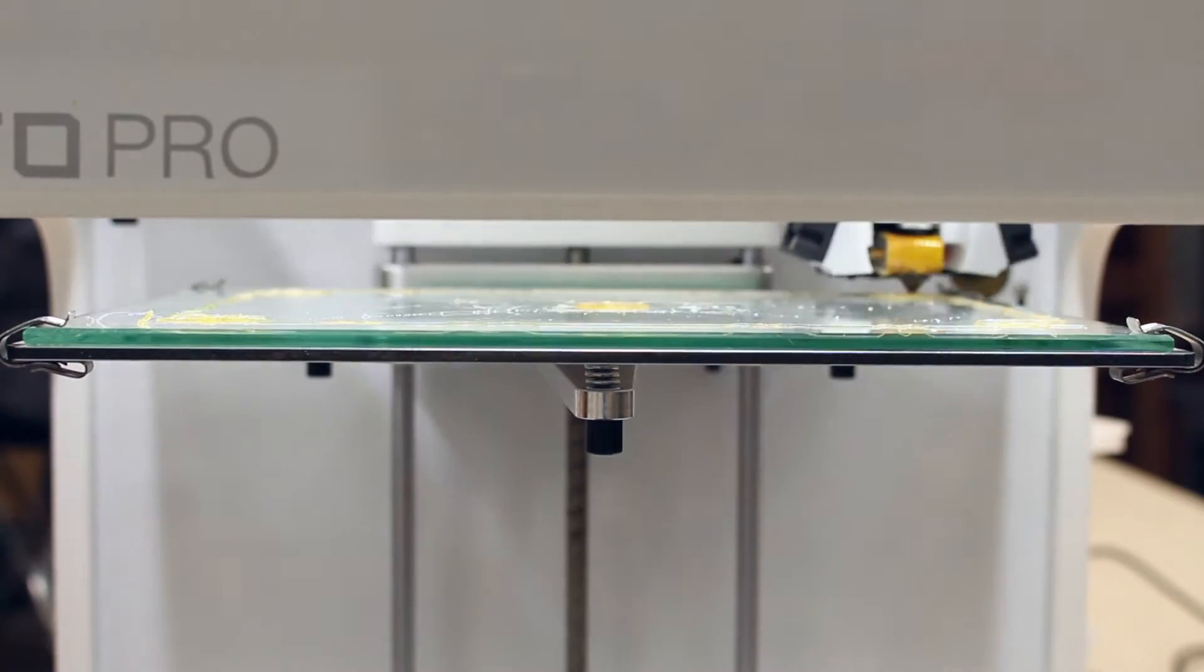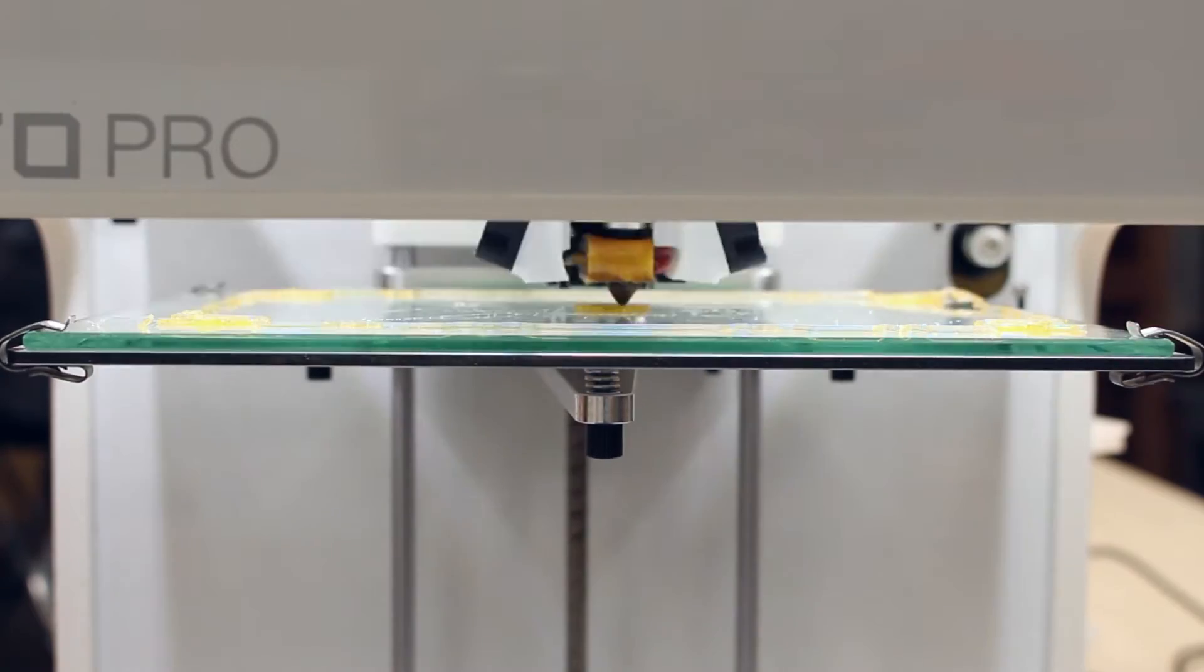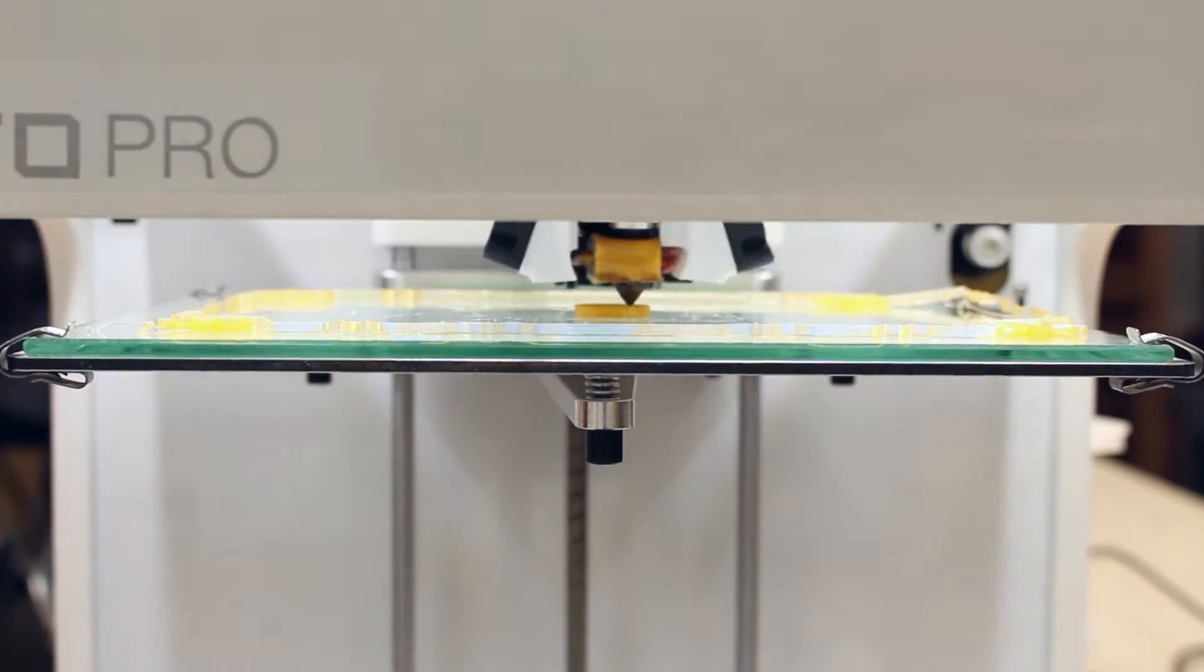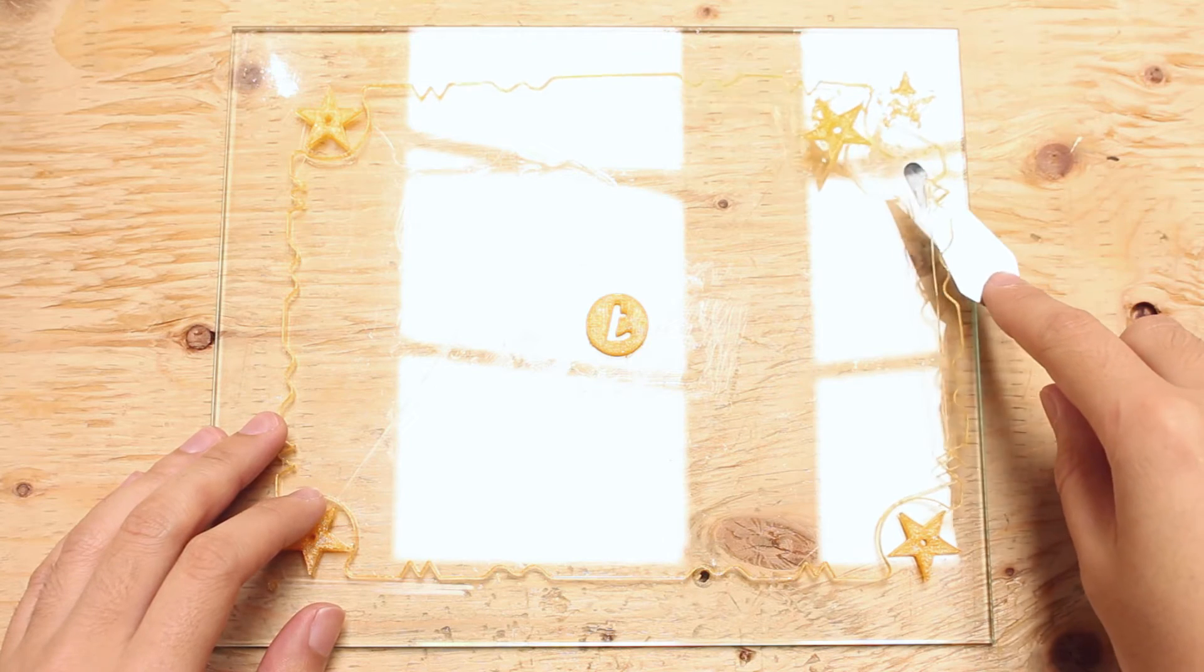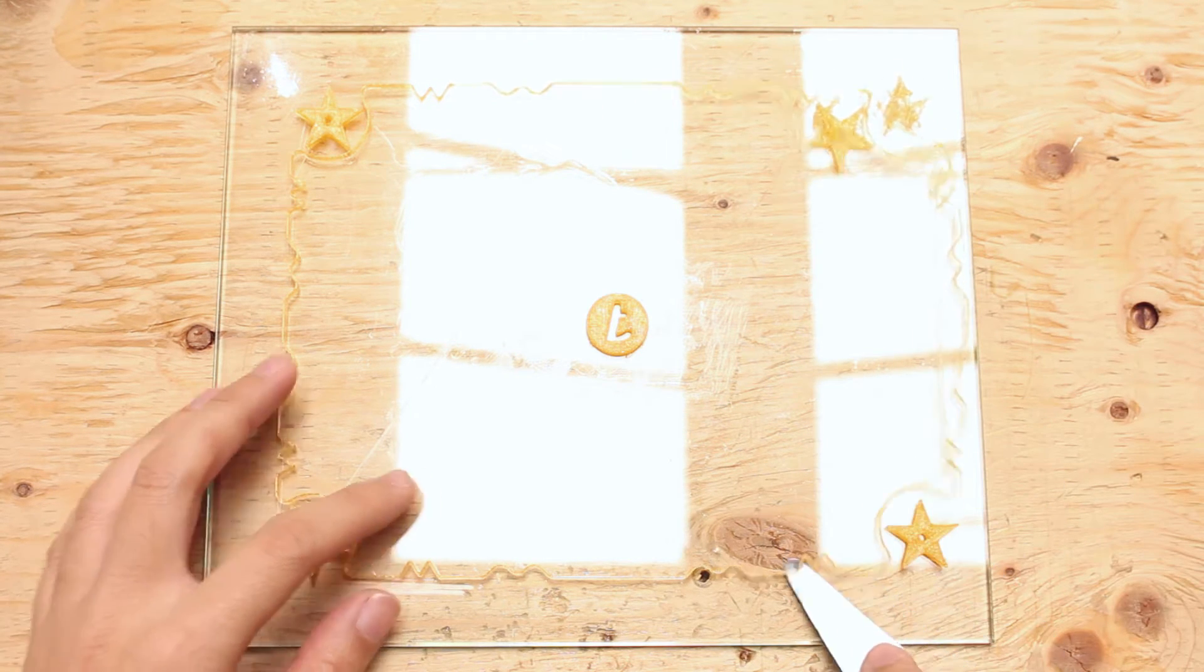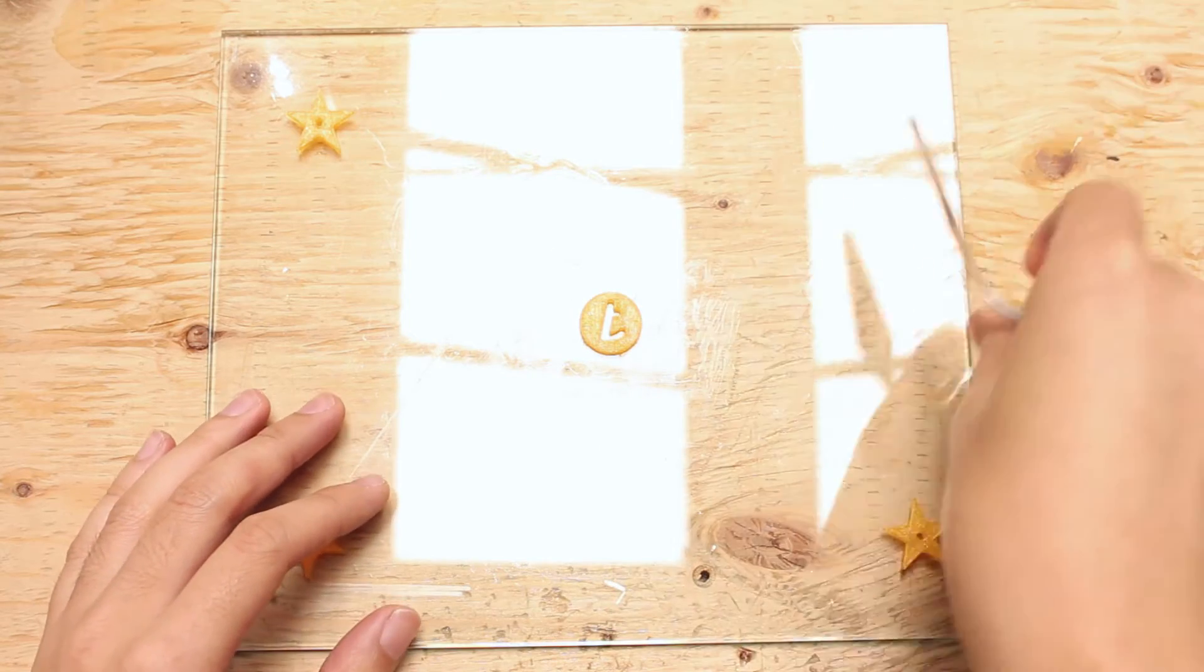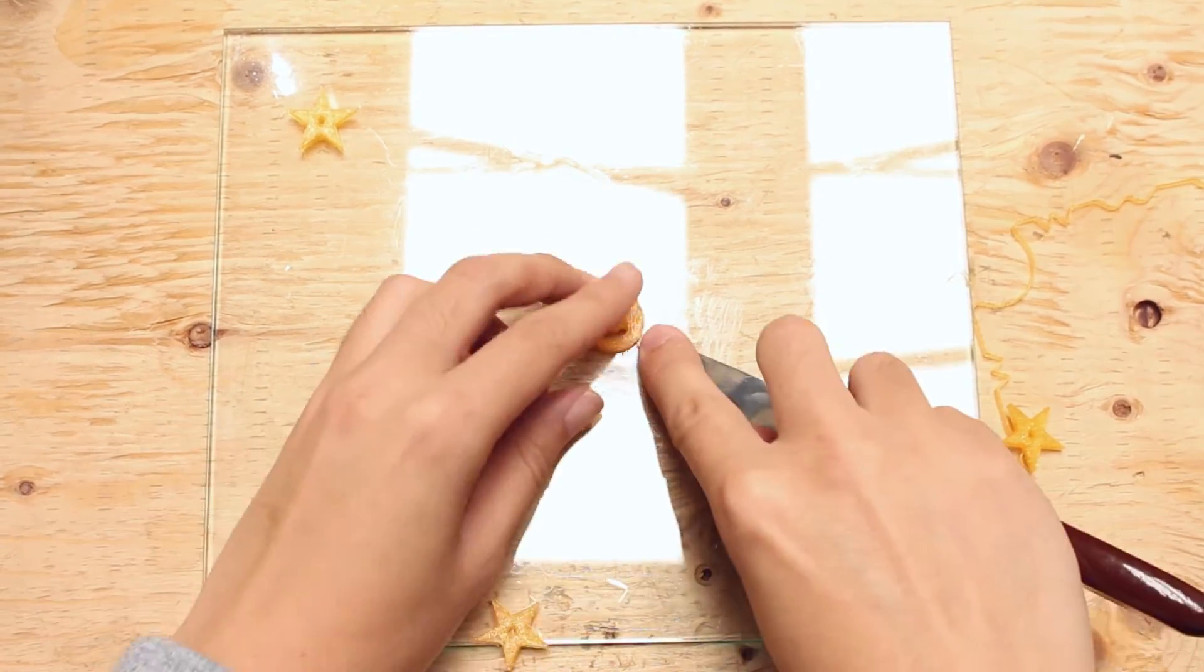Next is the perimeter print. The first layer stuck on well. But it looks like the back right corner is starting to lift. Well, it looks like the back right corner came off. The front star is a little bit loose as well. But the other side stuck on very nice. Maybe there just wasn't enough PVA sludge on that side causing it to pop off.